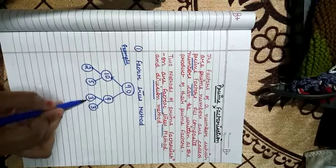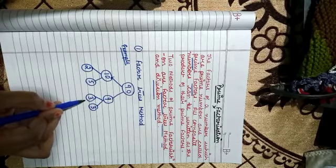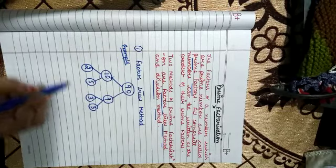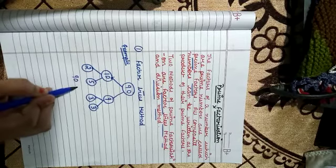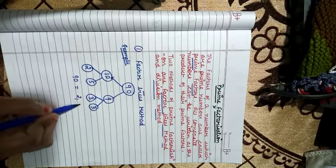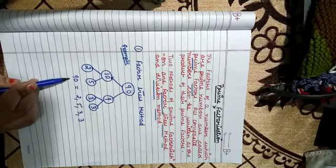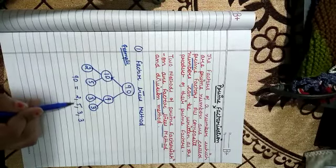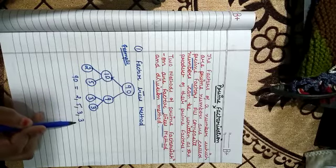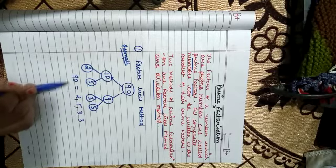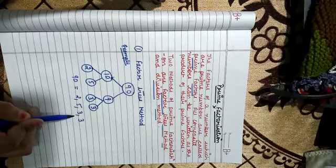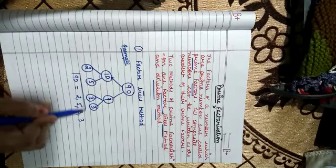See, 2, 5, 3 is prime number. So we will write 90 as 2, 5, 3, 3. Clear. 90 ka prime factor kaun sa hua? 2, 5, 3, 3. Means factors but which are prime. Now see another method.